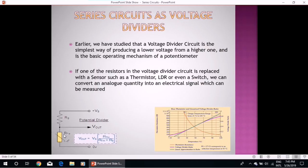If one of the resistors in the voltage divider circuit is replaced with a sensor such as a thermistor, LDR (that is light dependent resistor), or even a switch, we can convert an analog quantity into an electrical signal which can be measured.